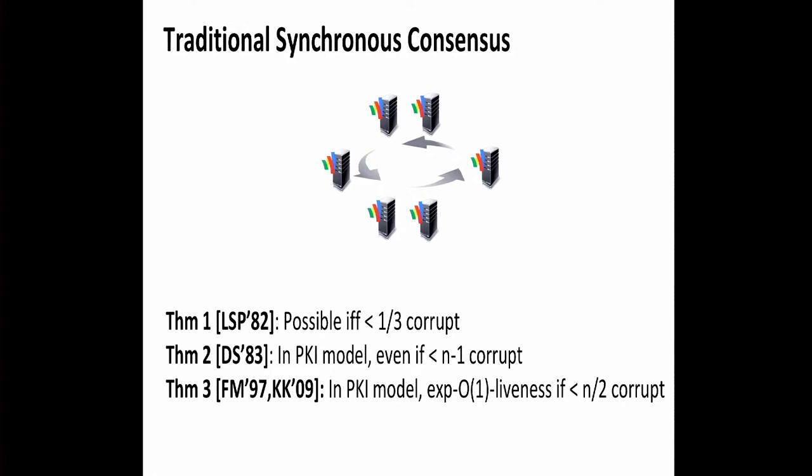If we additionally assume that 50% are honest, we can also get something that gives liveness within a constant number of time steps — specifically a constant times delta time steps for a transaction to be confirmed. There is still a little gap whether we can do better than the second result, but except for that, pretty much everything is known.